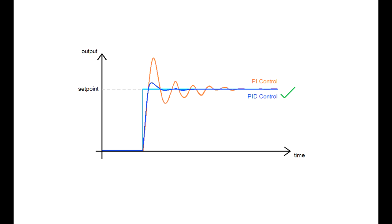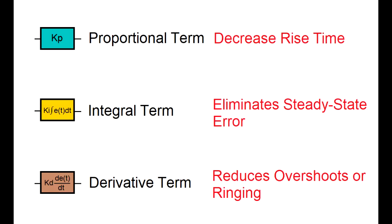Now if there's one thing I want you to take away from the past lectures, it's this: the proportional term decreases the rise time, the integral term eliminates the steady state error, and the derivative term reduces the overshoots and ringing.